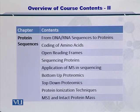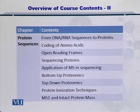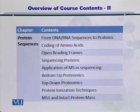In this chapter, we will begin by looking at the DNA and RNA sequences and their conversion into proteins, the coding of amino acids, and how open reading frames can be useful. Sequencing of proteins will then be looked at, and applications of mass spectrometry in sequencing will be specifically evaluated. This will be followed by two protocols: bottom-up proteomics and top-down proteomics, and we'll see how protein ionization techniques can be useful in performing these two protocols.